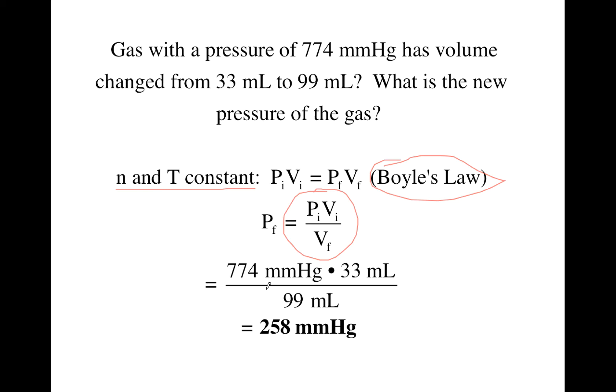And then you just start plugging in numbers from the question. So initial pressure, 774 millimeters of mercury. Initial volume, 33, and final volume, 99. So when you do the math, milliliters cancel, and you will end up with your final pressure in millimeters of mercury.